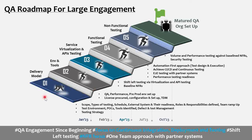Regarding the test automation roadmap slide shown here, a separate detailed video has already been created for that — a link will be added in the description. This video has covered how that automation roadmap fits into the overall QA roadmap, from testing strategy all the way through performance and volume testing, resulting in a mature QA organization setup. Hope this video has given you a good insight into building a roadmap for a large QA engagement.